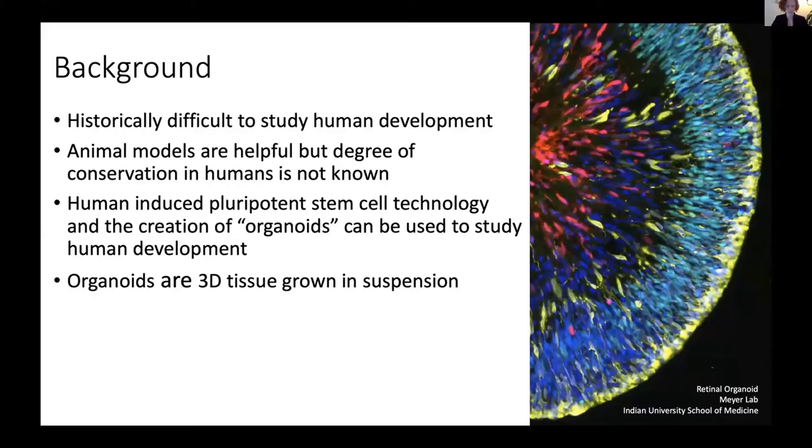These cells can be taken from adults, for example from urine collection, and they are induced to turn back into an embryonic stem cell-like state. What makes organoids so exciting is that they mimic what we know about in vivo human development and tissue architecture.